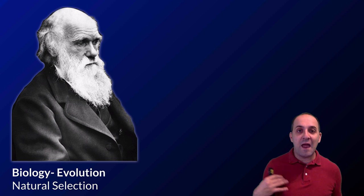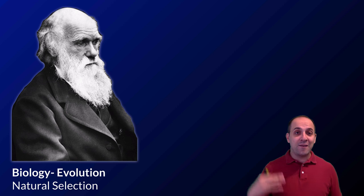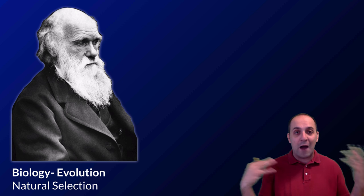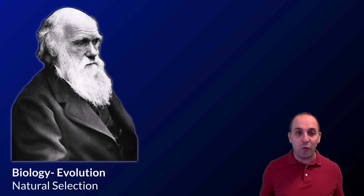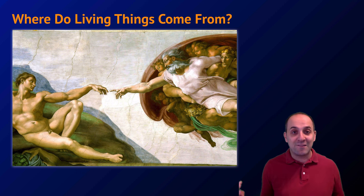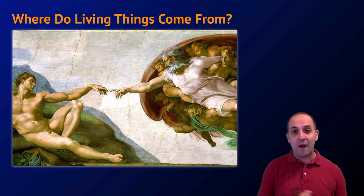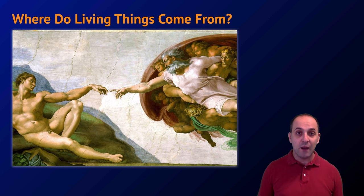We're going to start our course with evolution — it's going to be the first of our seven major units — and we're going to start our discussions of evolution by talking about Charles Darwin and his development of the theory of natural selection. It's important to understand that, like in evolution as in anything else in science, Darwin's ideas didn't come to him totally out of the blue. He based his ideas upon other people's thoughts as well. Darwin was the first one that really gave us a scientifically rigorous answer to where living things come from.